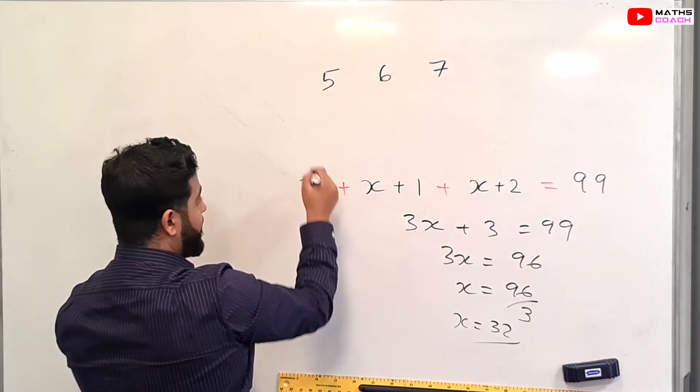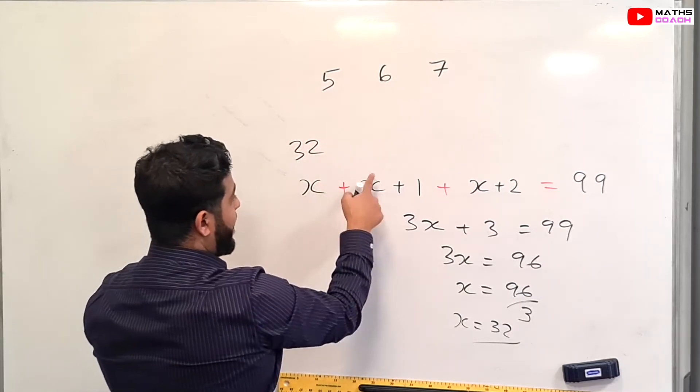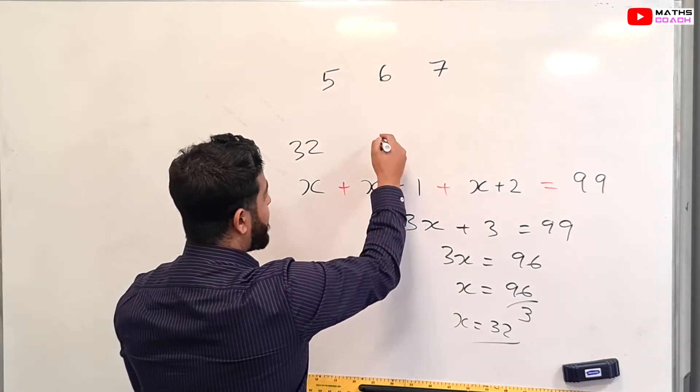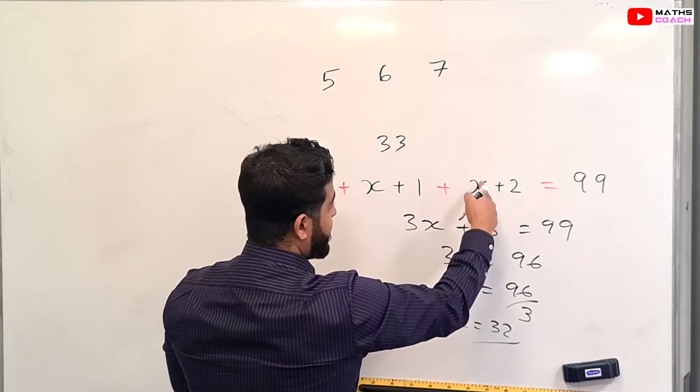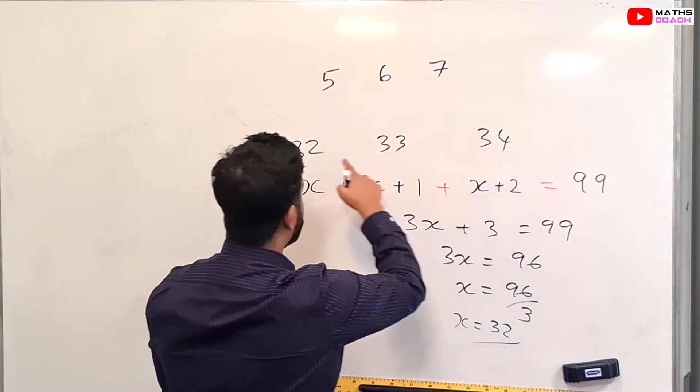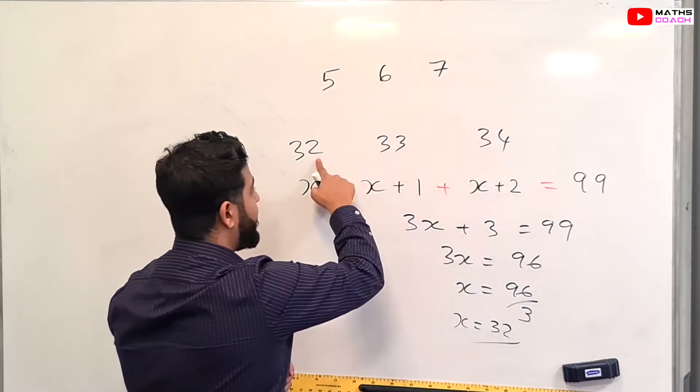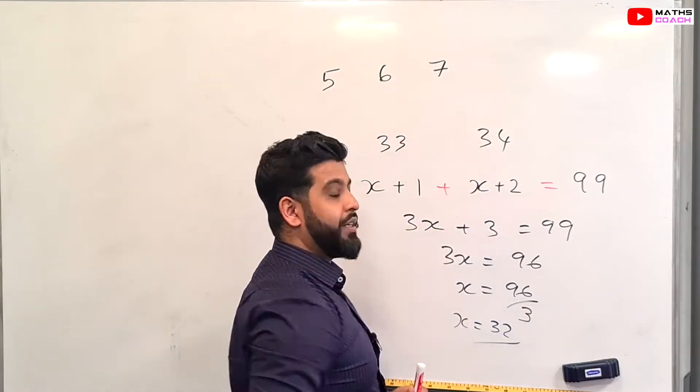Now if we plug them back in, X is 32, X plus 1 is 33, and X plus 2 is 34. So the three consecutive numbers are 32, 33 and 34.